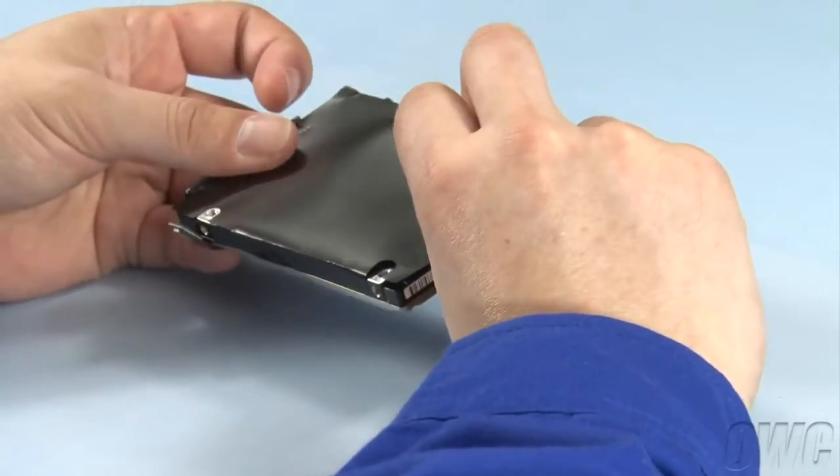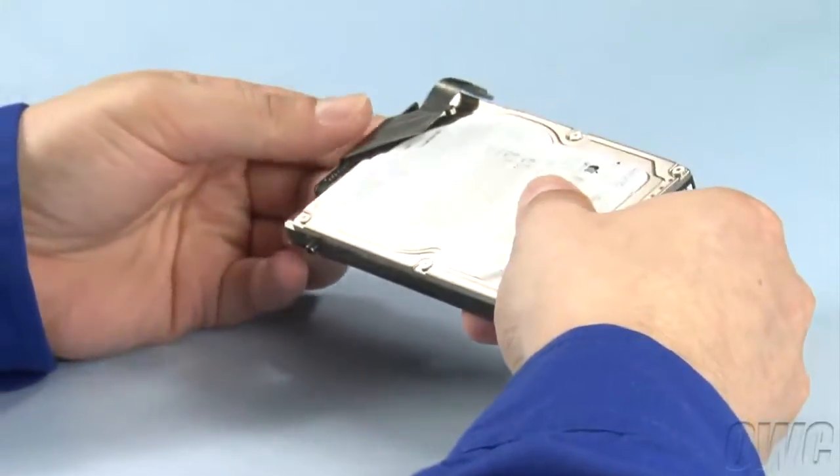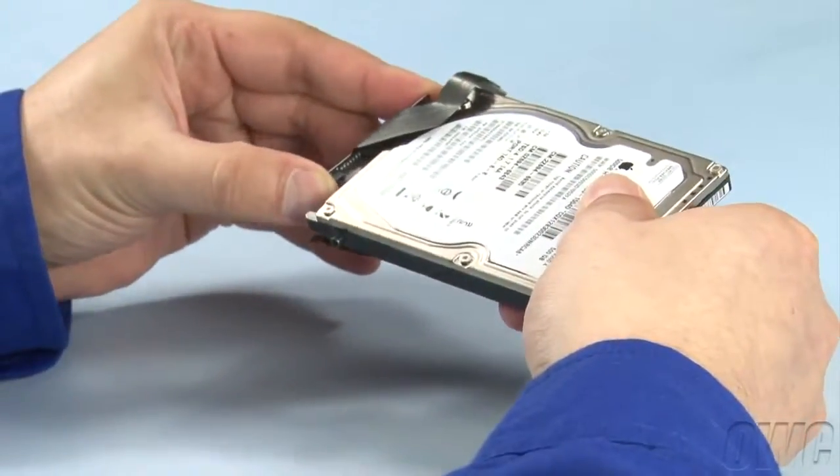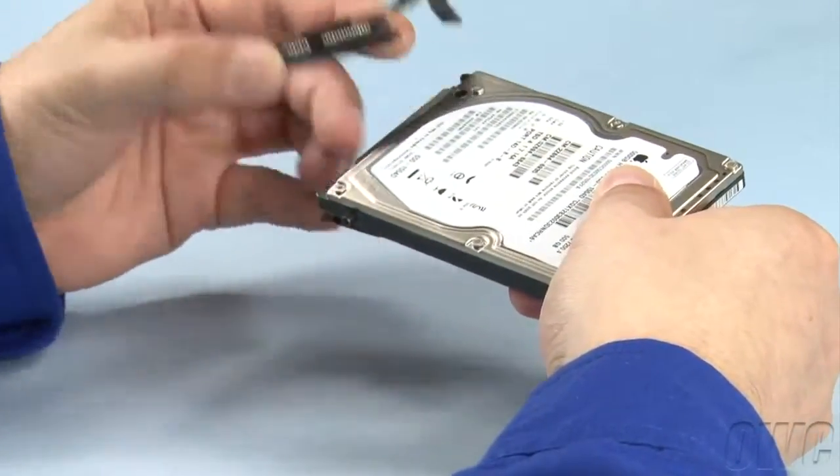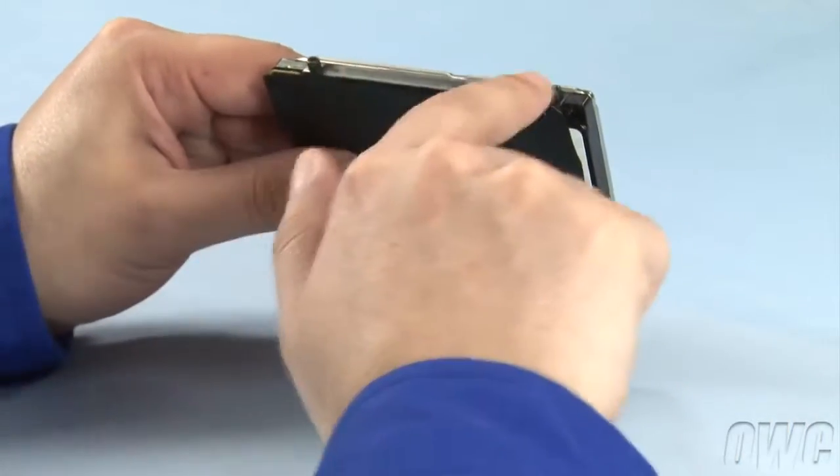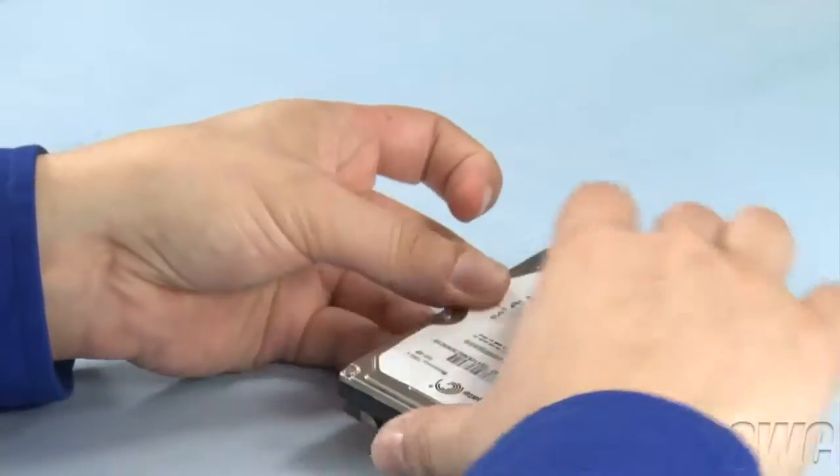There's some hardware we'll need to remove from the old drive so we can reuse it on the new one. First, remove the SATA connector by simply sliding it off. Next, remove these two mounting pins by using your Torx T8 screwdriver.